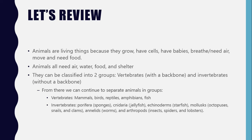We also classified animals into two groups: vertebrates, which are animals with a backbone, and invertebrates, which are animals without a backbone. And then we continued to separate the animals based on those two groups. Vertebrates have five groups: mammals, birds, reptiles, amphibians, and fish.